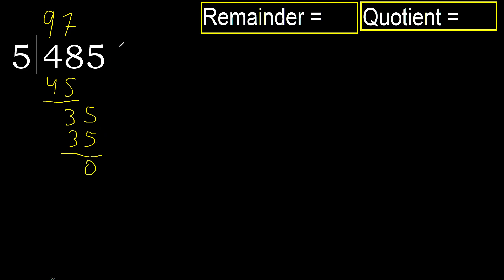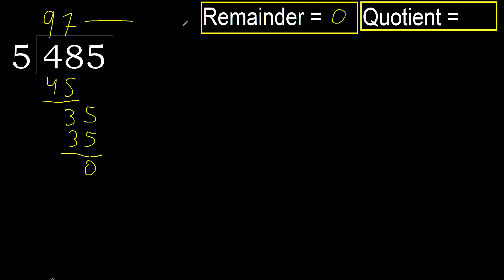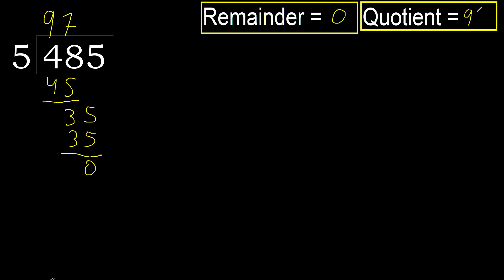Next — there is no next number, therefore finish. 485 divided by 5 is 97.